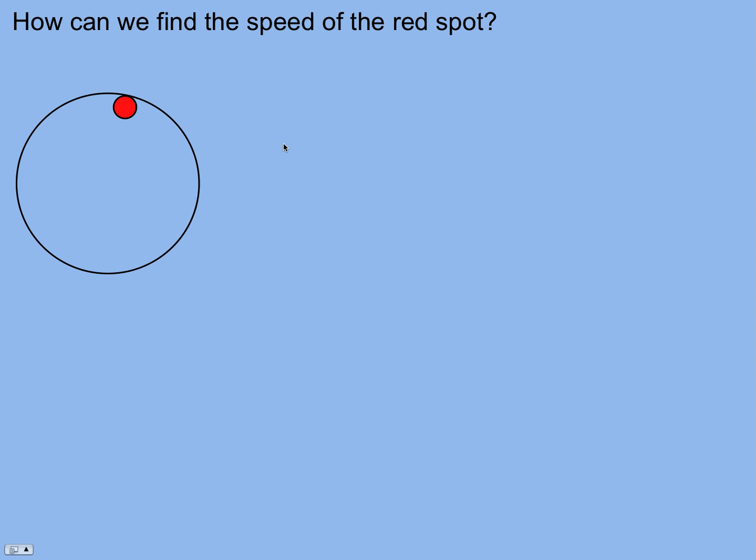Let's take a look at something that's moving in a circle. Here we have a spot on a turntable or something that's spinning. Let's say it moves from there to there, and we want to figure out what the speed of the spot is.